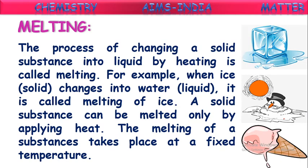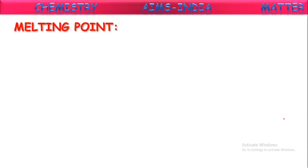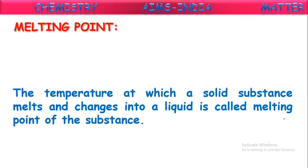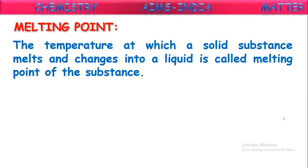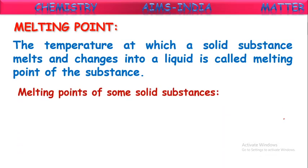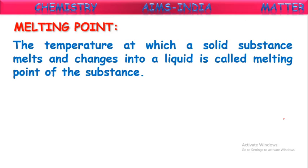Melting of a solid substance occurs only at a fixed temperature. That fixed temperature is called the melting point. The temperature at which a solid substance melts and changes into a liquid is called the melting point of the substance. For example, ice starts converting into liquid water form at a fixed temperature, and that fixed temperature at which ice converts into water is called the melting point of ice.